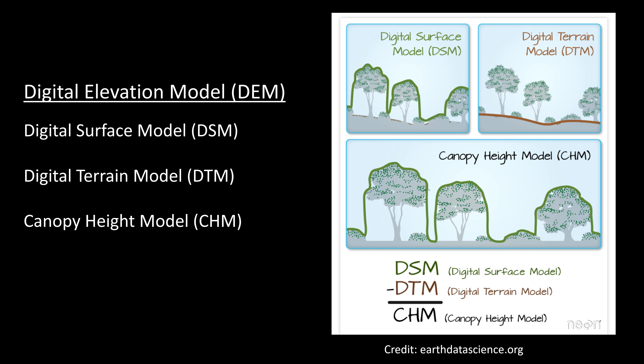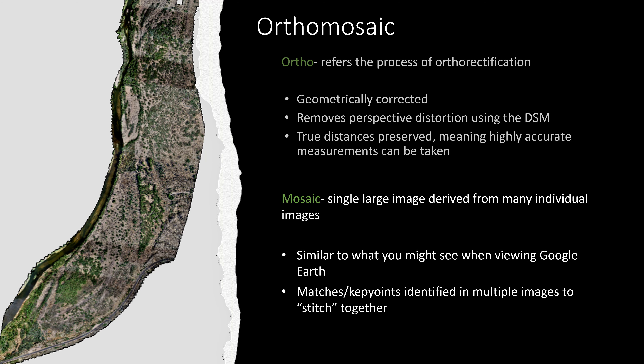Here is a great graphic from Earth Data Science that displays the differences between the three models, which are all varying forms of digital elevation models: a DSM includes all above-ground features, a DTM excludes those above-ground features, and a CHM looks at just the above-ground features. Moving on from digital elevation models, let's discuss orthomosaics. An orthomosaic is a single image derived by stitching together many individual images.